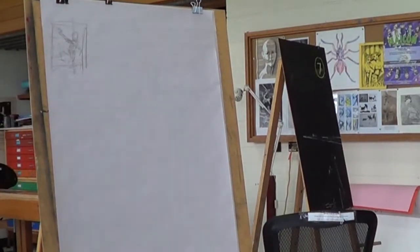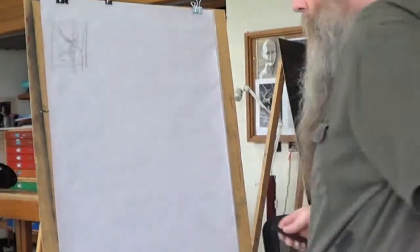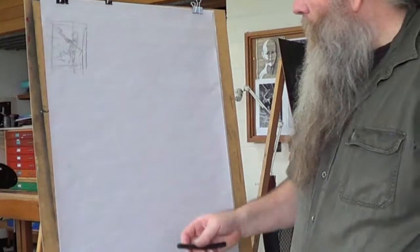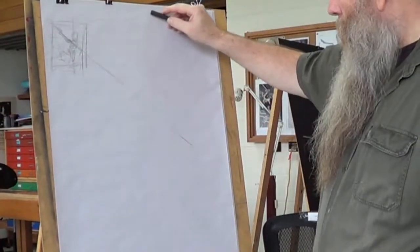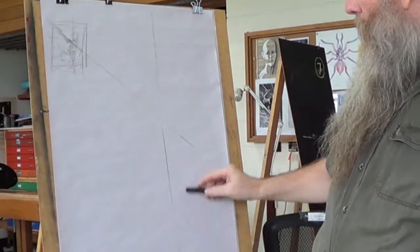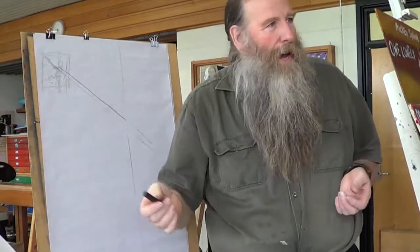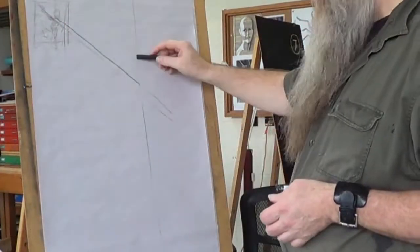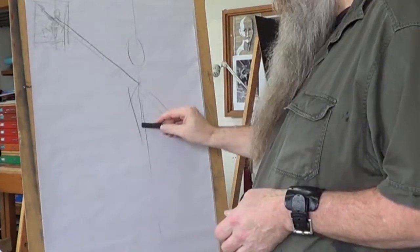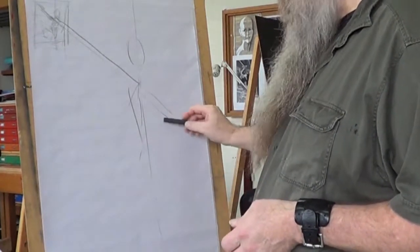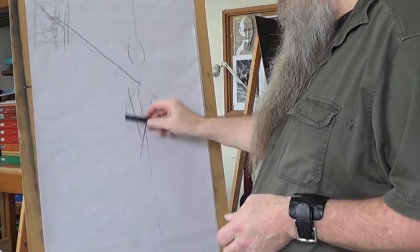I might grab a piece of charcoal so you can all see what I'm doing. I'm taking that composition — it's a third down here, there's a diagonal line. Diagonal lines cause drama in a composition. We have a head here, and it's pretty much like I'm drawing her even though she's not there.